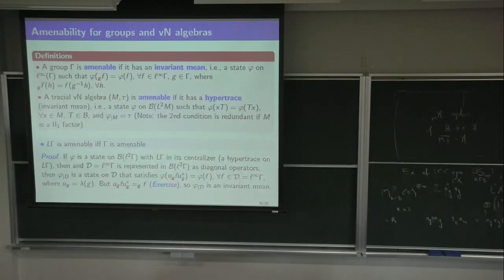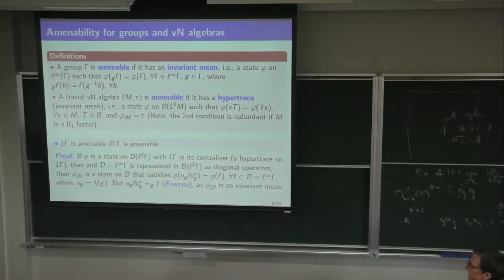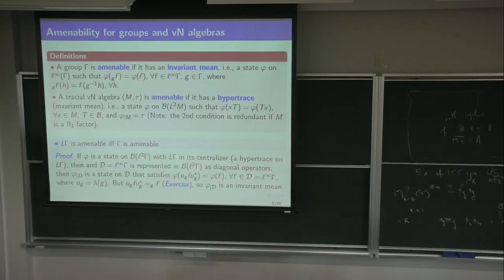First, I want to remind you the definition of an amenable group. A group is amenable if it has what's called an invariant mean — that means a state on ℓ^∞(Γ), the bounded scalar-valued functions on Γ, such that φ is invariant under left translation: φ(F_g) = φ(F) for any F in ℓ^∞ and any g ∈ Γ.